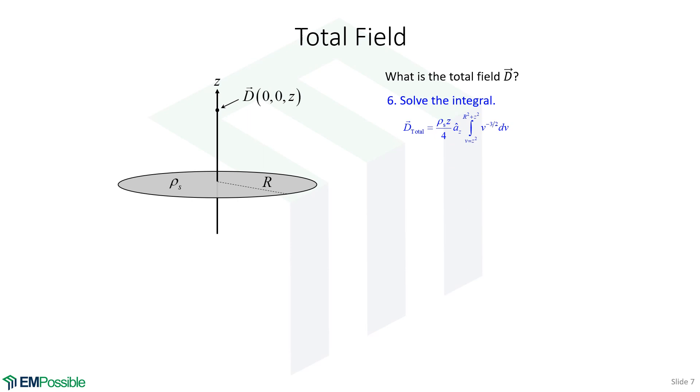This is the integral from the previous slide after we convert that integral over to v. The antiderivative of v to the minus three halves is v to the minus one half divided by the minus one half. So I can bring this minus one half out, combine it over here. We get a negative sign, and we also get it divided by two instead of four, because the one half times the four is a two. And the v to the minus one half is just one over square root of v. So I have to take this expression, evaluate it at r squared plus z squared, then subtract that expression evaluated at z squared.